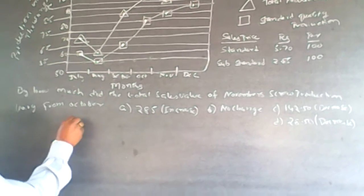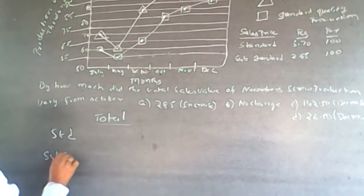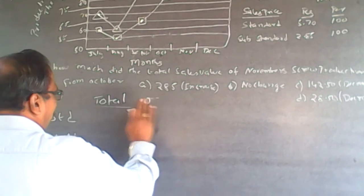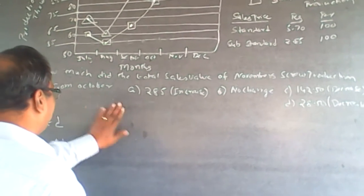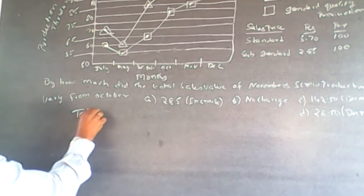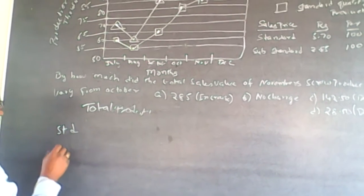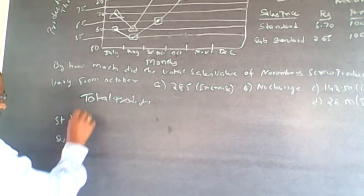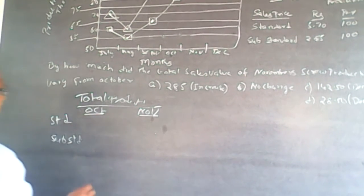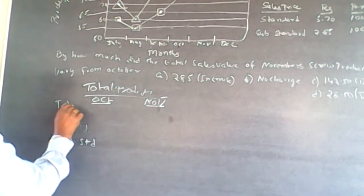So I will set up a table with total production, standard, and substandard for both October and November. Out of total production, we will have standard and substandard components for each month.